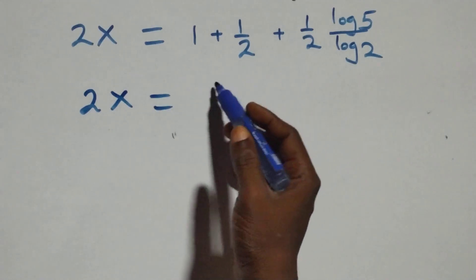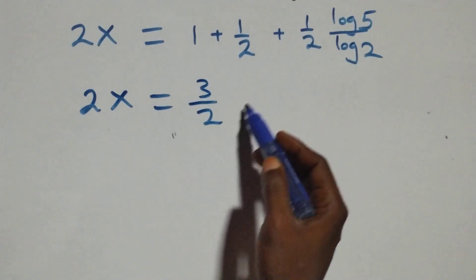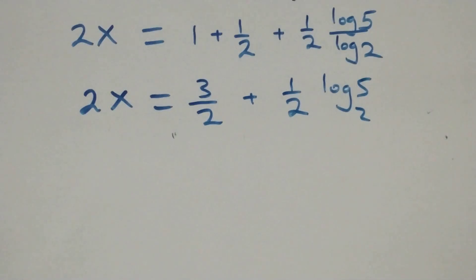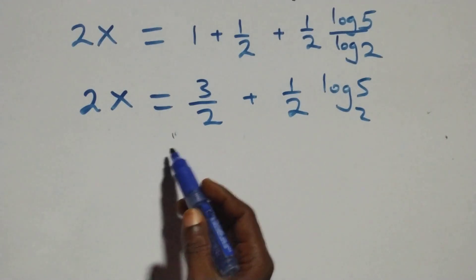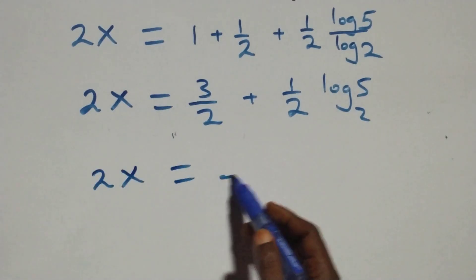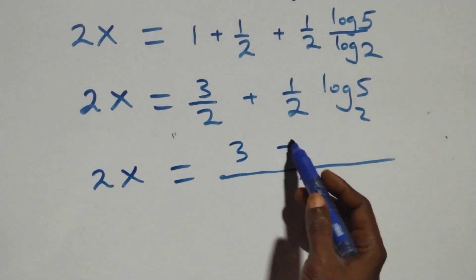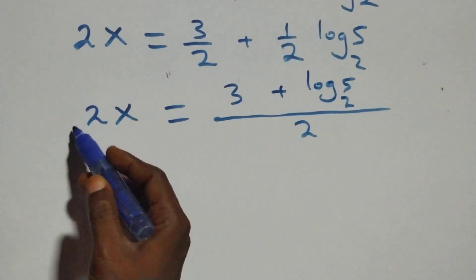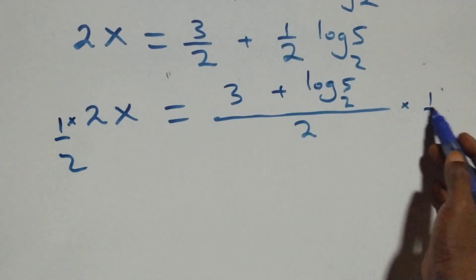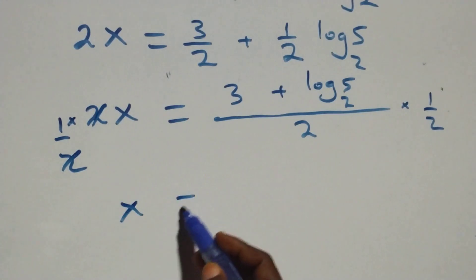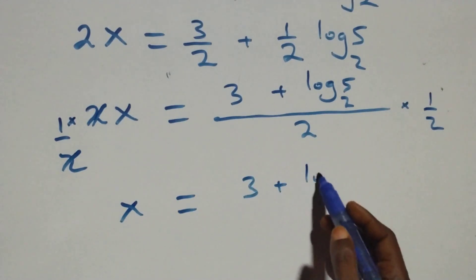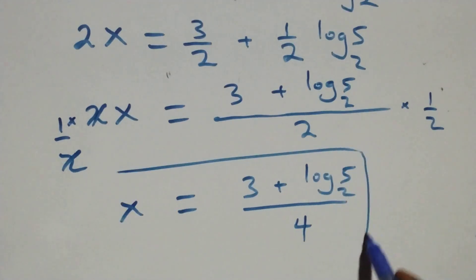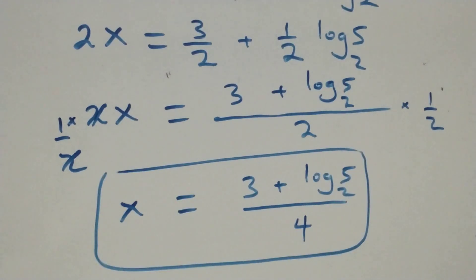Then we apply the change of base rule: log 5 over log 2 is log₂5. Bringing this together as a fraction, we have 2x equals 3/2 plus (1/2)·log₂5, which equals (3 + log₂5) over 2. The next step: we multiply both sides by 1/2. So 2 cancels, and we have x equals (3 + log₂5) over 4.